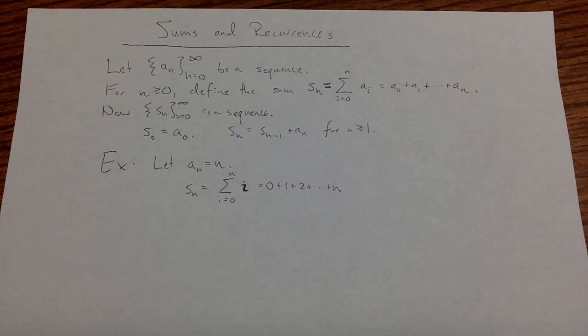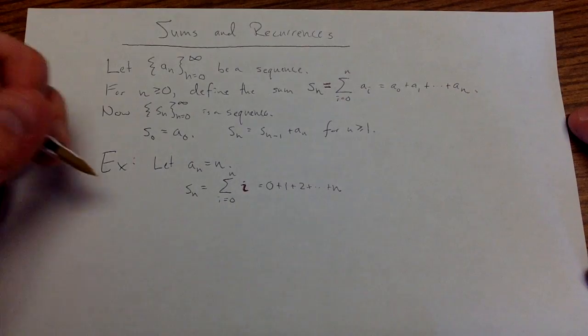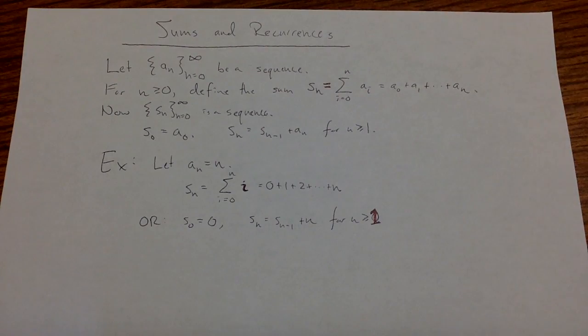To define this with a recurrence relation, I'll start with S_0 being 0. Then for n at least 1, I can define it using a recurrence relation: S_n equals S_(n-1) plus n.